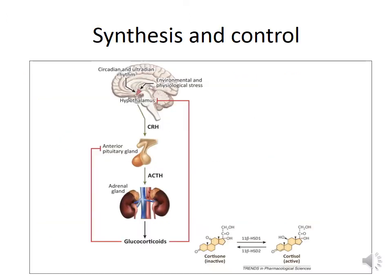Cortisol secretion is under strict control of the hypothalamic-pituitary-adrenal axis, which is under control of the circadian rhythm and physiological, psychological, and environmental stressors. The hypothalamus is triggered to release the corticotropin-releasing hormone, or CRH, which in turn stimulates the anterior pituitary gland into secretion of ACTH. ACTH is then sent to the adrenal gland where it stimulates the secretion of cortisone, which is later activated into cortisol.